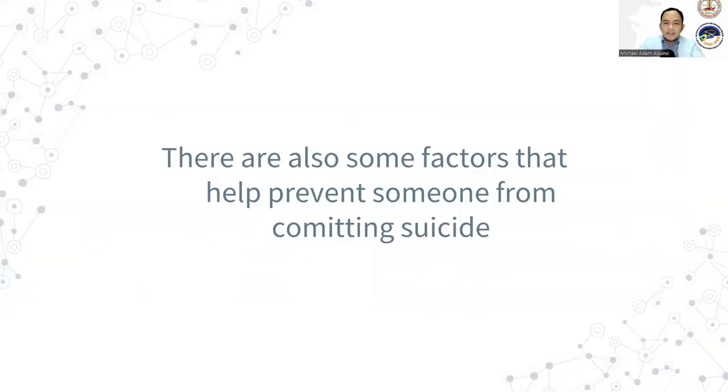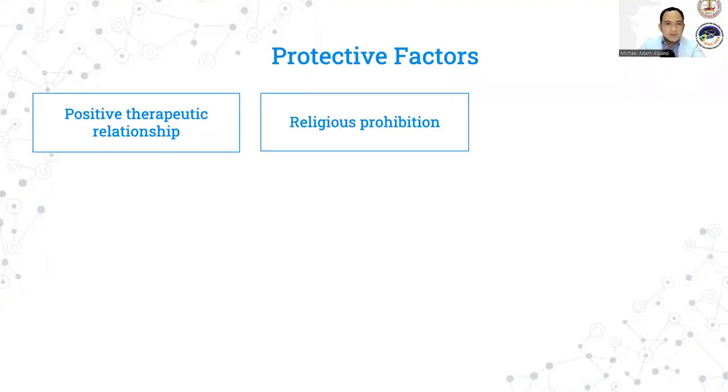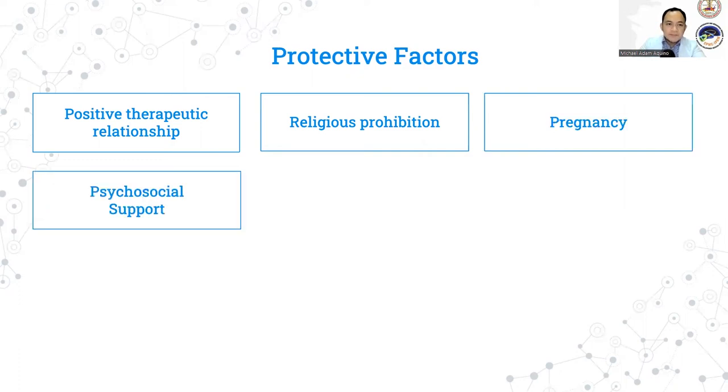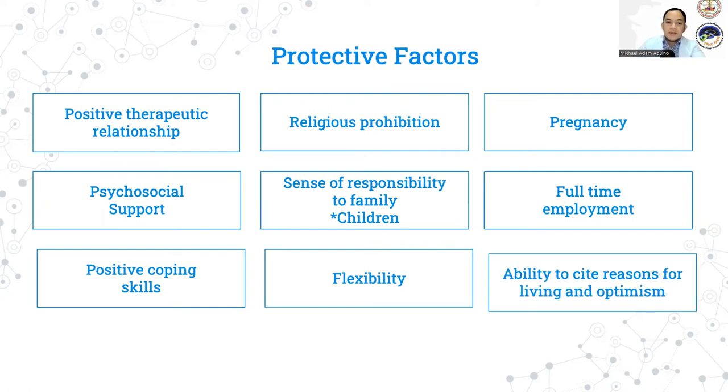There are also some factors that help prevent someone from committing suicide. These include those with a positive therapeutic relationship, those with religious prohibition, or whose religious faith strongly opposes suicide, if the person is pregnant, those with good psychosocial support, having strong social ties with their loved ones, those with a sense of responsibility to their family, especially to those who have children, those who are enjoying a full-time employment, those people who have positive coping skills, where they can ultimately find ways of looking at their problems in a positive way and dealing with them, those who are flexible in managing aspects of their life, in work, family, and the stresses of life, and those with the ability to cite reasons for living and optimism.